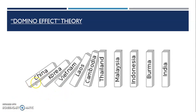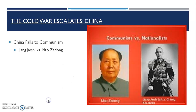The first country, as you can see in our domino effect theory, is China. In China, there was fighting going on between democracy and communism already. In fact, this fight had started before World War II and had been put on pause so that they could fight Japan when they were being attacked. The two main players were Zhang Zixi and Mao Zedong.